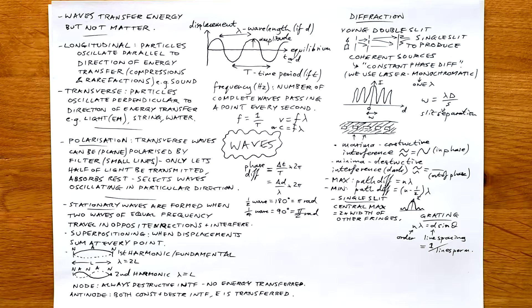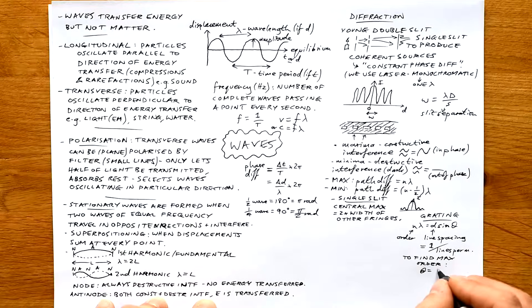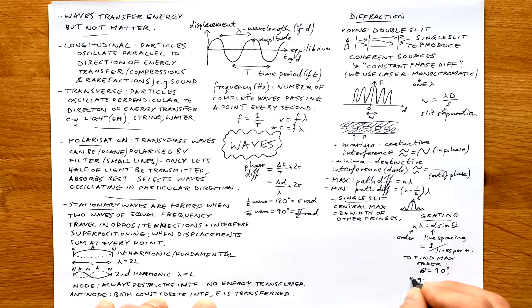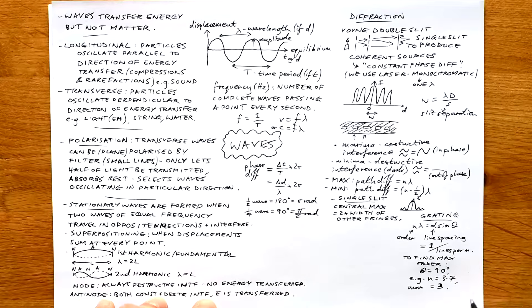To find the maximum order, theta equals 90 degrees. For example, you'll end up with something like n is equal to 3.7. The max is three - you can't have a 3.7 order at 90 degrees.